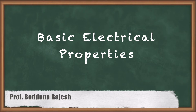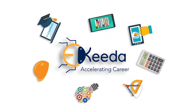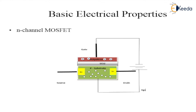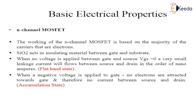Today's class is about basic electrical properties of the N-channel Metal Oxide Semiconductor Field Effect Transistor. We will look at the structural diagram and study what happens at different modes when VGS is negative, positive, and zero.